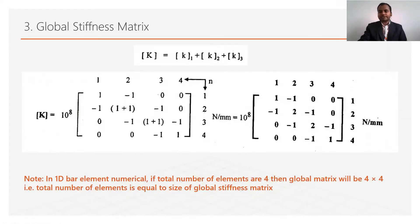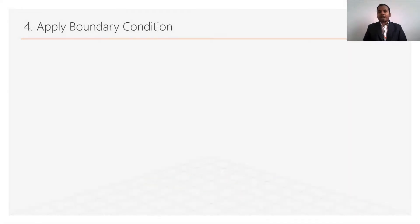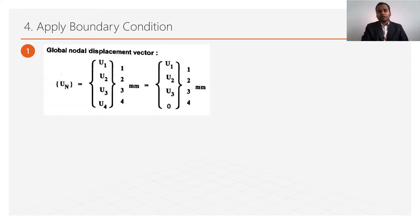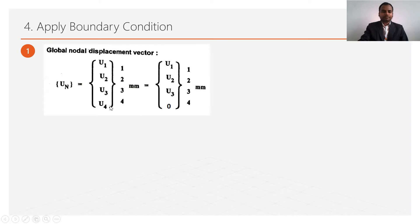This is the global stiffness matrix — step number 3 of the finite element analysis. Step number 4 is to apply boundary conditions, meaning identifying where the body is fixed and where forces are applied. First, write the global nodal displacement vector. With 4 nodes, there are 4 displacements: u₁ at node 1, u₂ at node 2, u₃ at node 3, and u₄ at node 4.